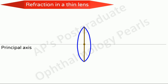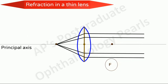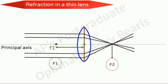Next we shall see what the principal focus is. It is the point at which parallel rays of light all converge after refraction. Similarly, rays passing through the principal focus become parallel after refraction. Each lens has two principal foci. The first principal focus is the point of origin of rays which, after refraction by the lens, are parallel to the principal axis. The distance from the principal point to the first principal focus is the first focal length. Incident light parallel to the principal axis is converged to the second principal focus, whose distance from the principal point is called the second focal length.